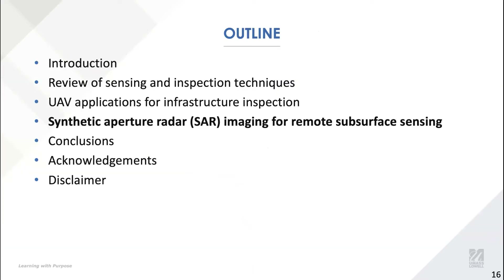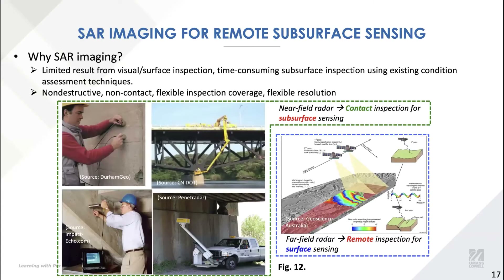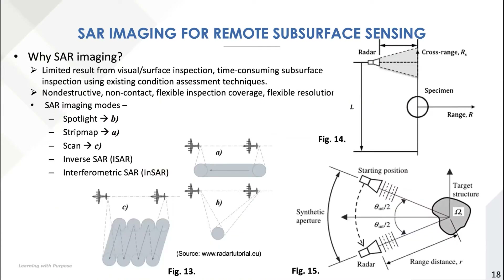Now let's talk about SAR imaging and what we can learn from SAR images of concrete structures. SAR imaging is a mature technology in remote sensing, usually performed by a SAR imaging sensor carried by an aircraft or satellite platform. Traditionally, researchers and engineers use SAR imaging for large area terrestrial sensing such as landscape shift. We decided to borrow this idea from remote sensing, but we are interested in looking at near-surface information in SAR images of concrete structures — essentially combining advantages of near-field and far-field sensing to perform remote sensing and obtain subsurface information. SAR imaging has multiple modes: spotlight mode, strip map mode, scan mode, inverse mode, and many other new modes being developed by researchers.